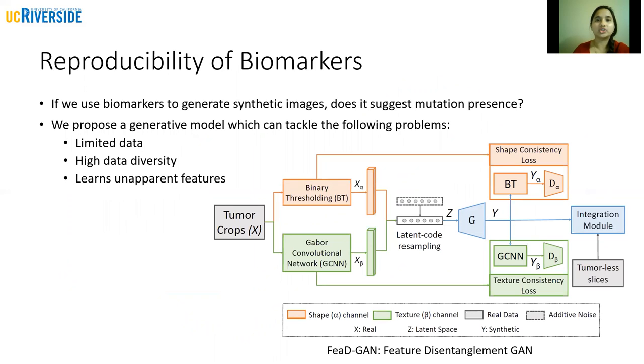If we use the biomarkers to generate synthetic images, does it suggest mutation presence or not? To recreate these features, we need generative models.